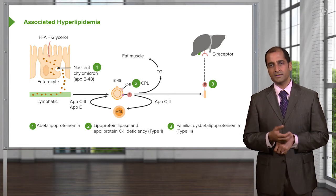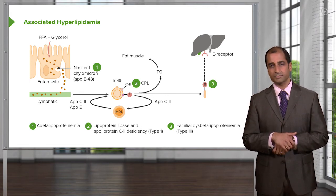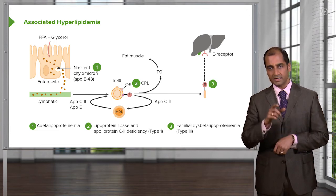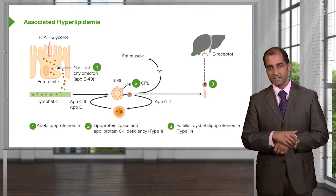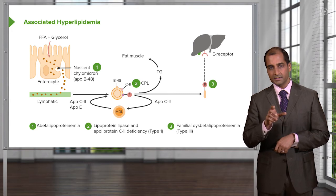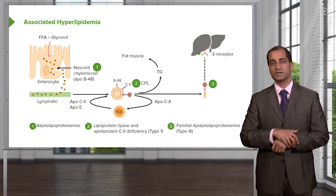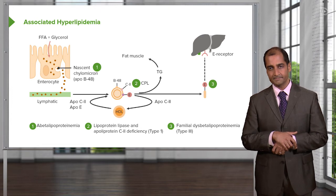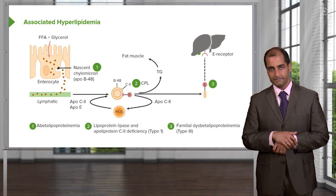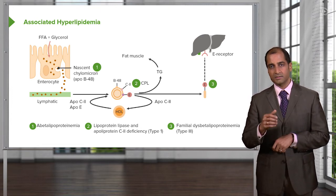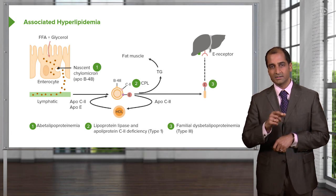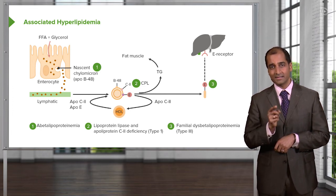These lymphatics eventually make their way to the thoracic duct, which empties into the right atrium. From the right atrium you enter your blood vessels. Inside that blood vessel, notice that HDL — what's called good cholesterol — is then going to donate its C2 and E to the nascent chylomicron.